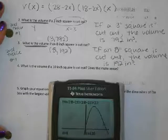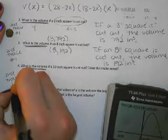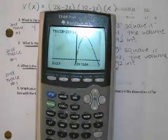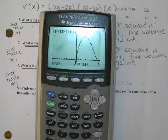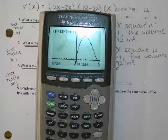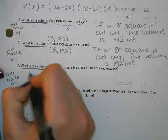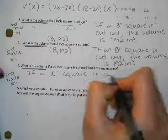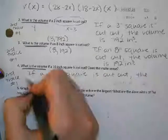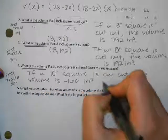What if you have a 10-inch square cut out? The volume would be negative. Does it make sense to cut out a 10-inch square? No — you'd have no width left to the box. Does it make sense to have a negative volume? No — these are extraneous solutions. Mathematically we can solve for it, but in context it makes no sense. If a 10-inch square is cut out, the volume would be negative 160 inches cubed, which is not physically valid.